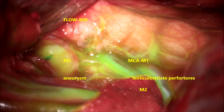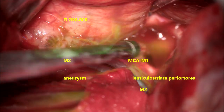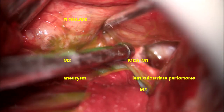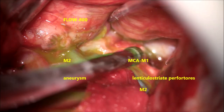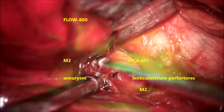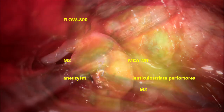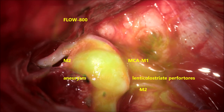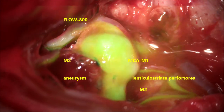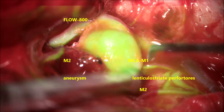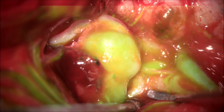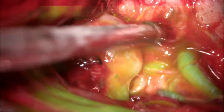The Flow 800 ICG confirms the lenticulostriate arteries originating from M1. The M1 is identified, and distally the veins and arteries in the Sylvian fissure are visible. The dome of the aneurysm is clearly seen. ICG with Flow 800 nicely and clearly demonstrates the anterior M2 division, the posterior M2 division, and the aneurysm dome.